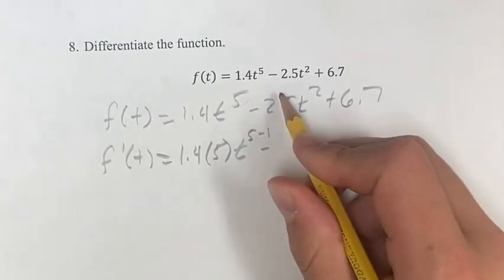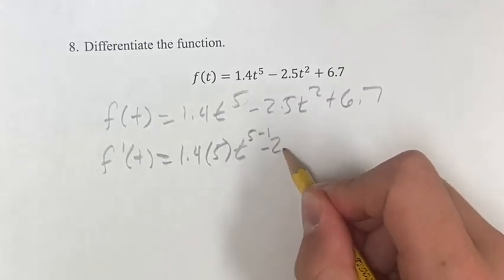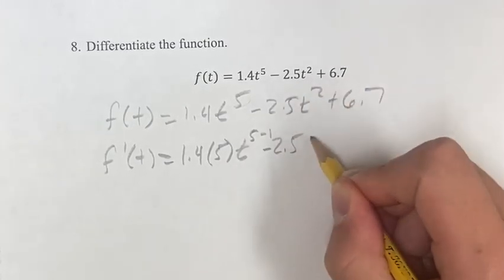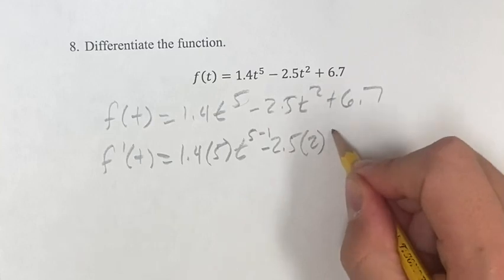Do that for the next one. Minus. Keep the coefficient out front, bring the exponent down, subtract 1 from the exponent.